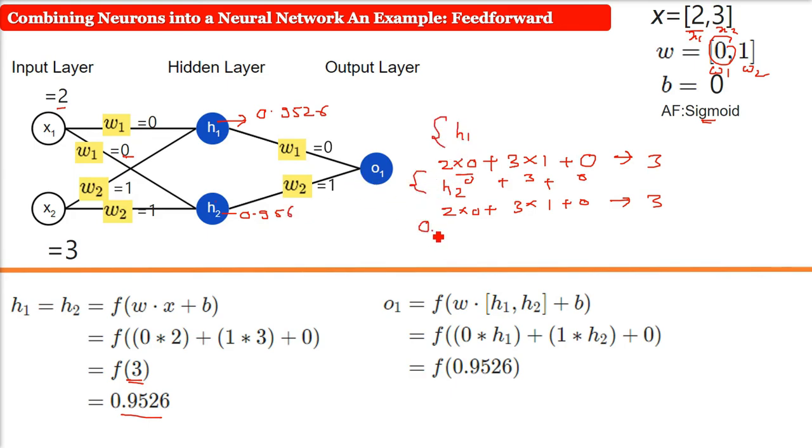Now compute for O1. What will O1 get? We will do the same thing. This is our input. So input into, this is say X1 and this is X2. So X1 into 0, that is X1 into W1 plus X2 into W2. This is what we do, plus bias.